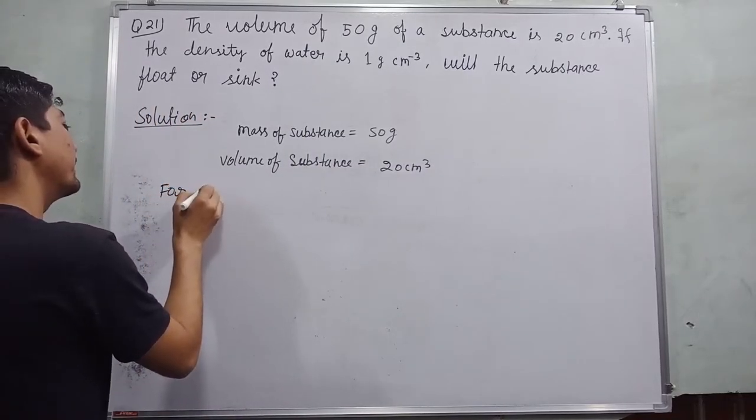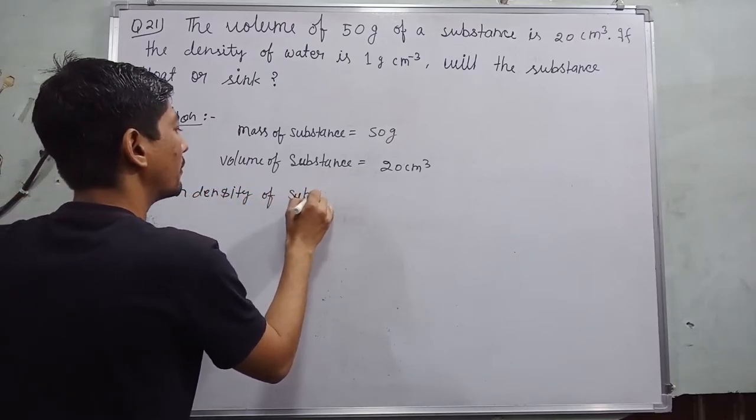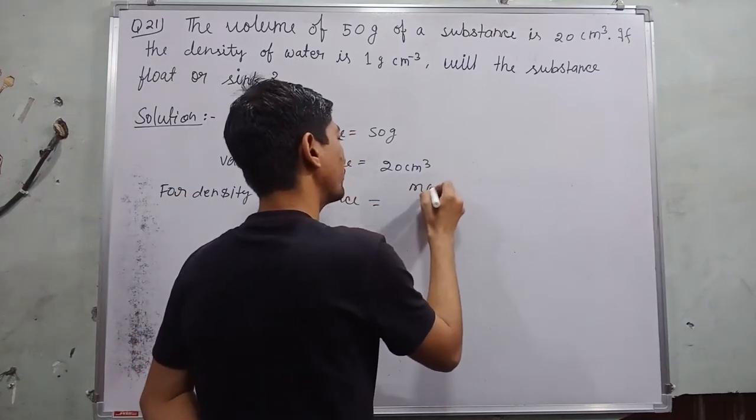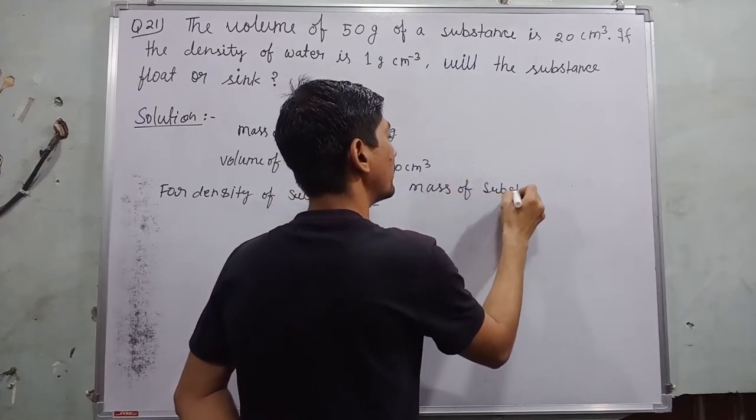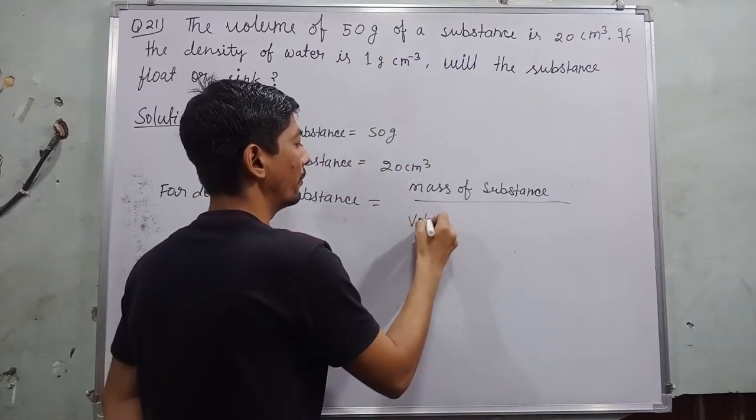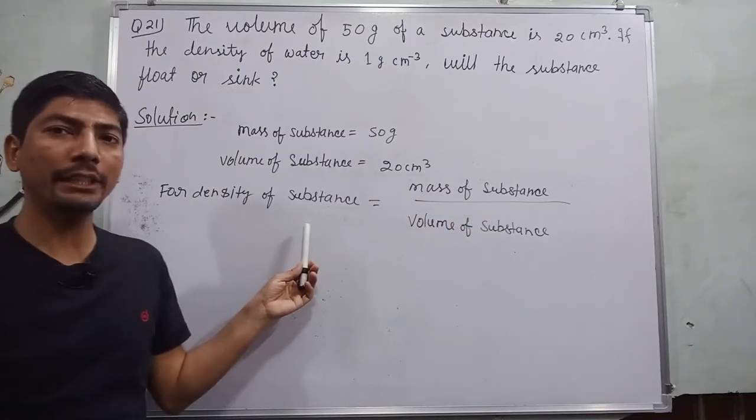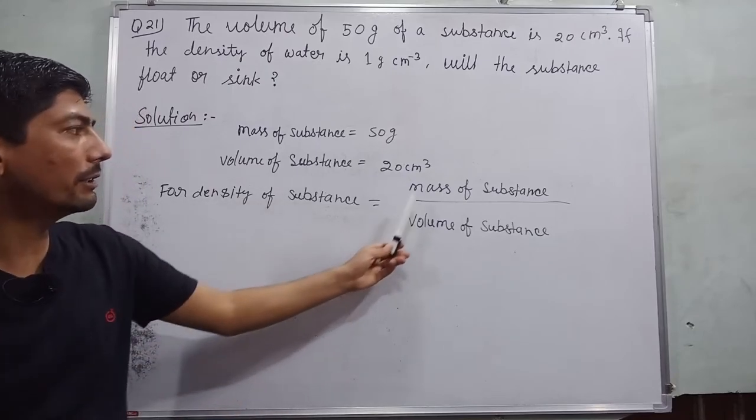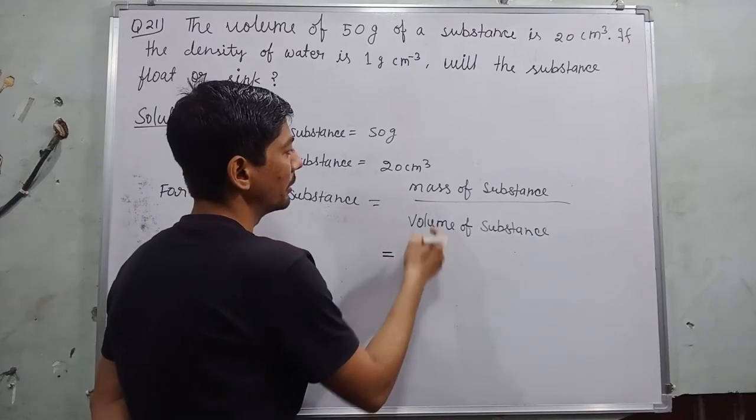Okay, now using formula: density for density of substance is equal to mass of substance over volume of substance. So here density of substance is equal to mass of substance over volume of substance.